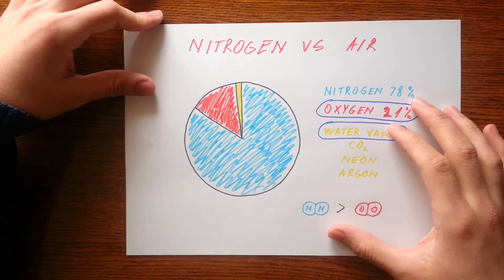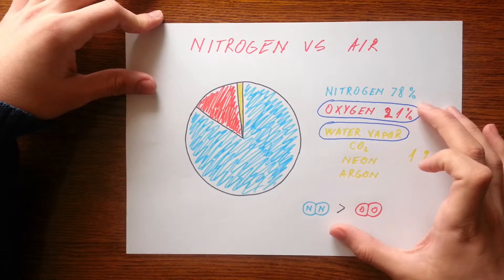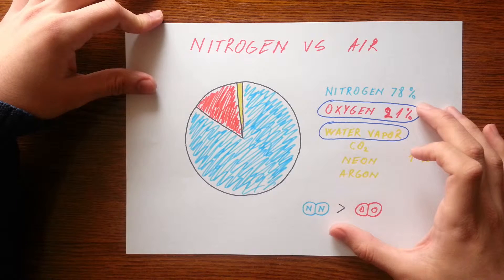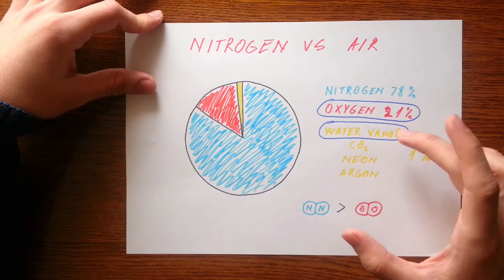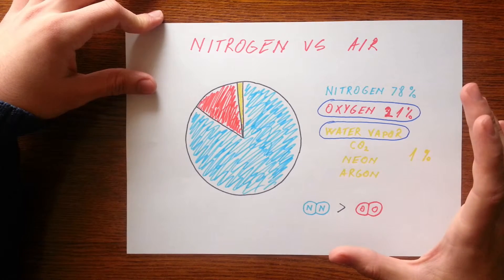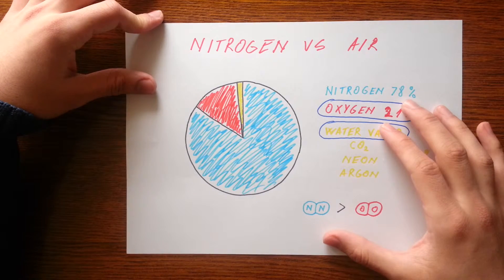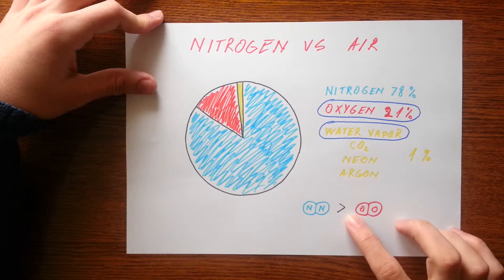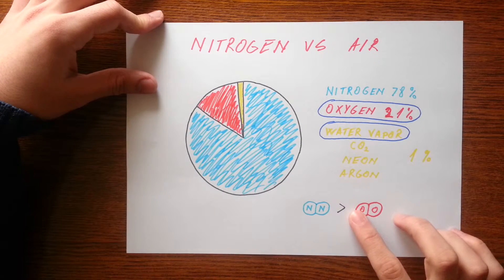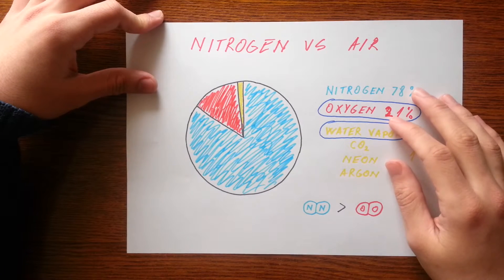So when we pump our tires with normal compressed air, we're mainly filling them with nitrogen anyway. But the oxygen and water vapors are the tricky parts here. Oxygen molecules are small enough to pass through the tire structure, and this is one of the reasons why our tire pressure slowly goes down.